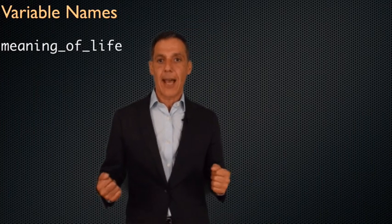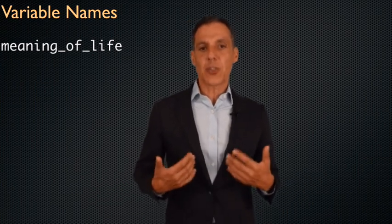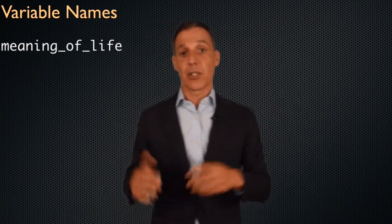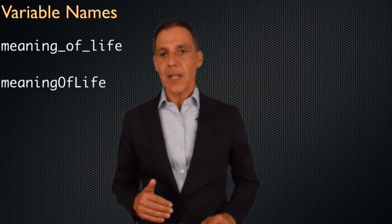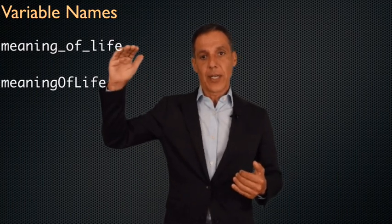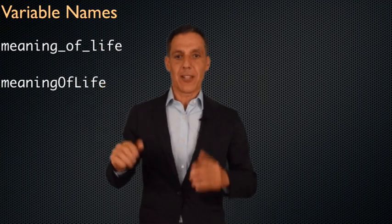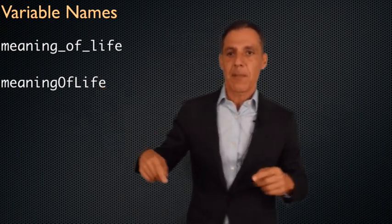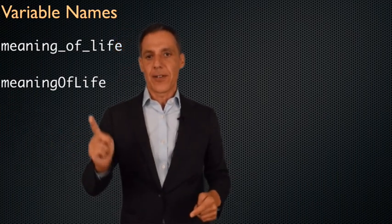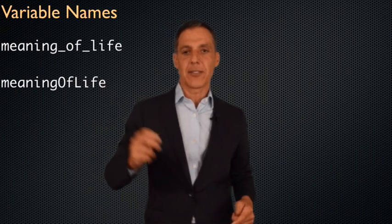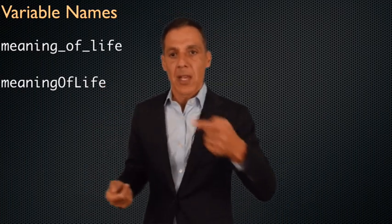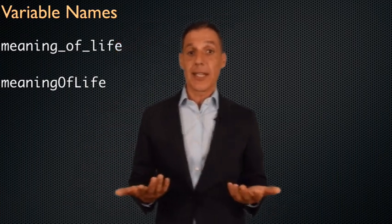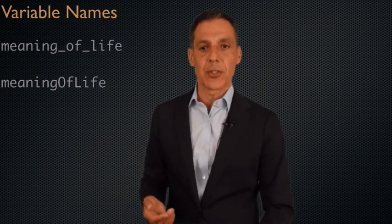A couple of things about variable names: names matter. You want to use meaningful variables so that when you or your TAs or the next person looks at your code, they'll understand what you are doing. This is also an example of style versus substance. Some people use underscores when they have variable names that are multiple words — so you can read it more readily. Other people use so-called camel case — where the next word is capitalized. Is one better than the other? No. I have a preference, but pick a style you're comfortable with, something you find easy to remember, and just stick with it. That will become your habit and your style.